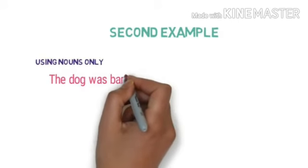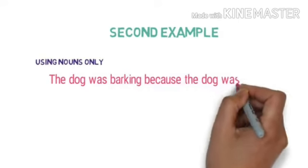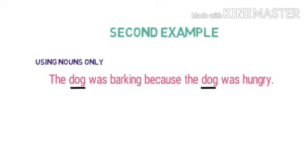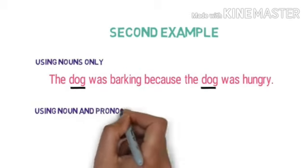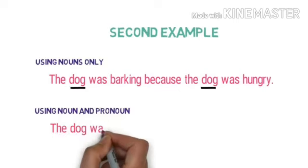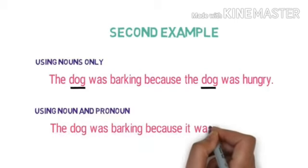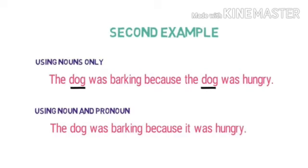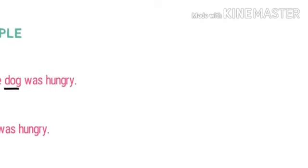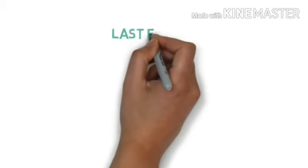Now, let's see another example using nouns only. The dog was barking because the dog was hungry. Here we used it in the place of dog. And that made our sentence simple.